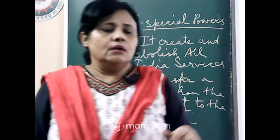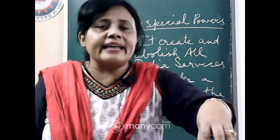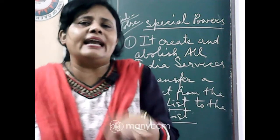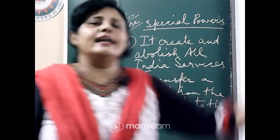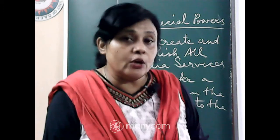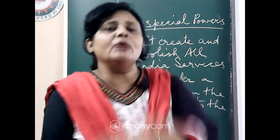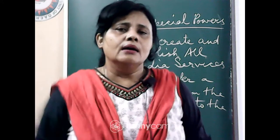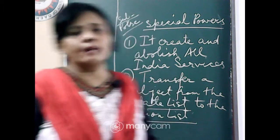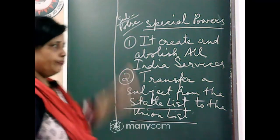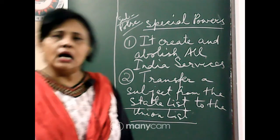The Lok Sabha can also change the boundaries of a state — for example, a union territory can be declared a state, or a state can be converted into a union territory. Goa, for instance, was once a union territory and was later elevated to the status of a state. These are the special powers of both houses of Parliament.